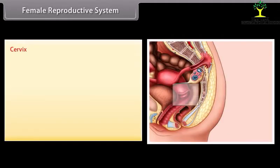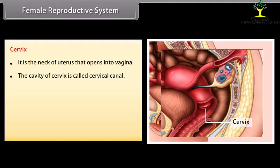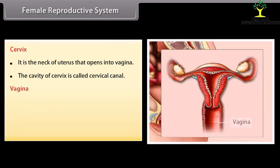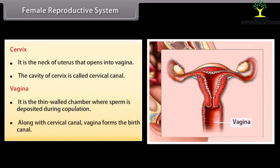The cervix is the neck of the uterus that opens into the vagina; the cavity of the cervix is called the cervical canal. The vagina is a thin-walled chamber where sperm is deposited during copulation. Along with the cervical canal, the vagina forms the birth canal.